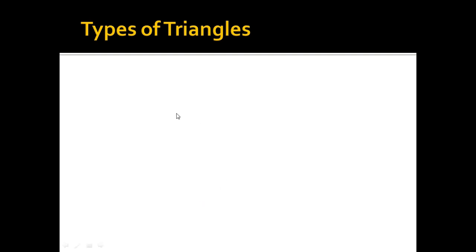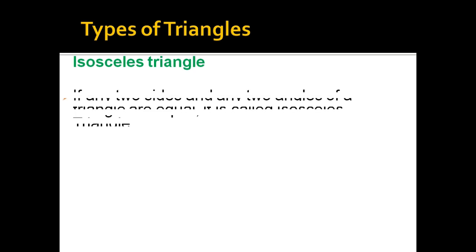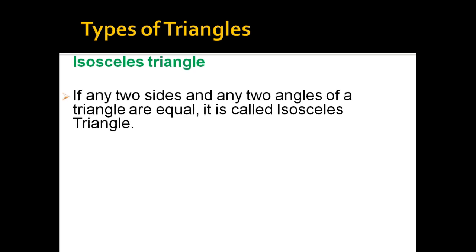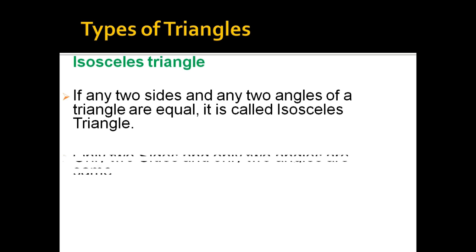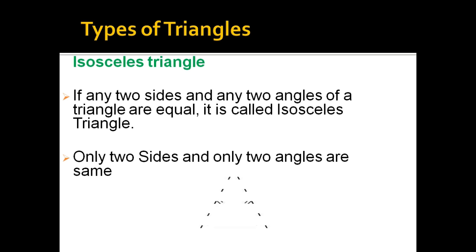The second type is the isosceles triangle. In an isosceles triangle, any two sides and the corresponding two angles are equal. In the figure, only two sides are equal — unlike the equilateral triangle where all three are equal. For example, if one side is 5 cm, only that side and one other side are 5 cm.